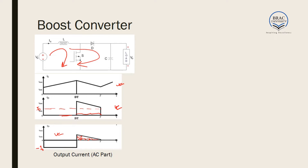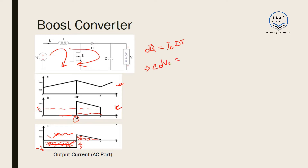Since the amount of charge stored equals the amount discharged, we can calculate using either part. For the easier calculation, dQ equals the area of the rectangle, which is height × breadth = I_0 × DT. So C·dV_output = (V_output / R) × DT.